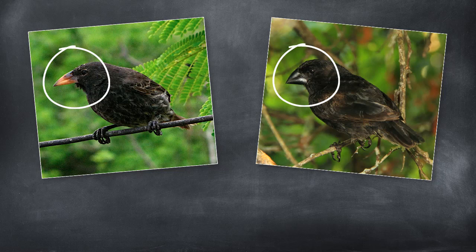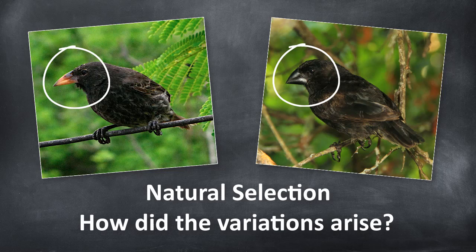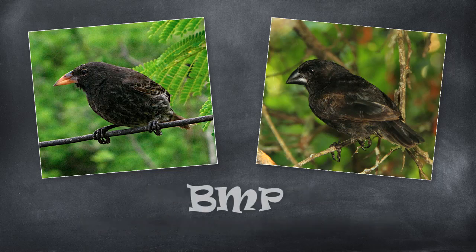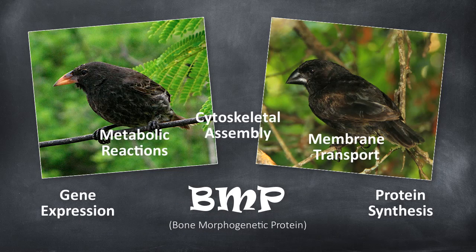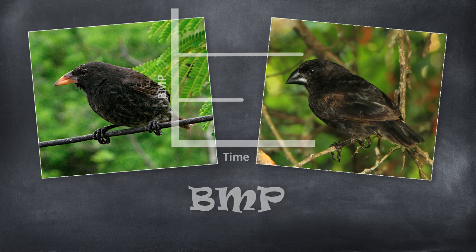On the left is a forceps-like beak ideal for dealing with fruits and seeds. On the right is a heavier beak ideal for cracking nuts. Natural selection provides an elegant explanation for how these varied beaks came to be preserved in different habitats. But how do the variations arise in the first place? Apparently by varying the expression of a signal protein called BMP. BMP modulates the deployment of conserved core processes in the cells and tissues giving rise to the beak. The smaller forceps beak results from lower levels and a shorter duration of BMP expression during development, whereas nutcracking beaks result from higher and longer levels of BMP expression. Simply vary BMP and you vary overall beak shape.